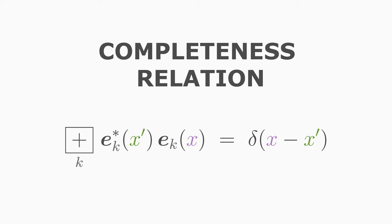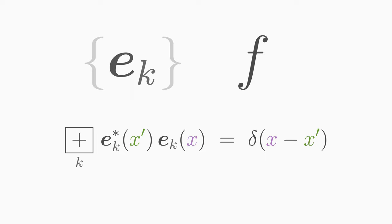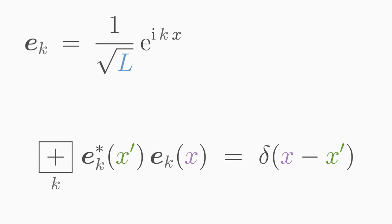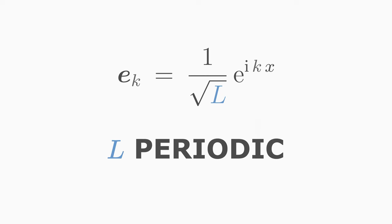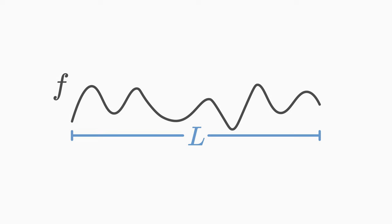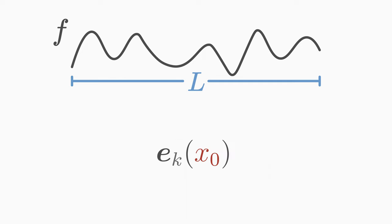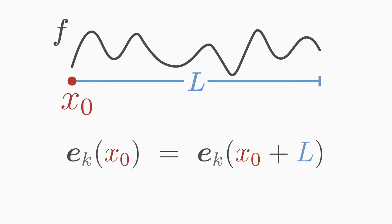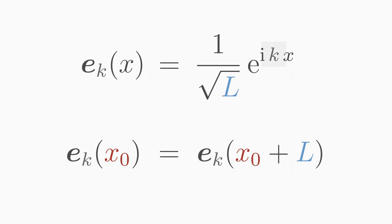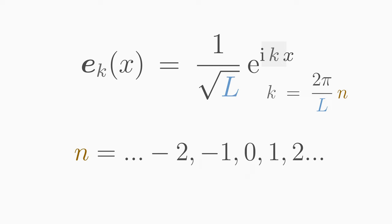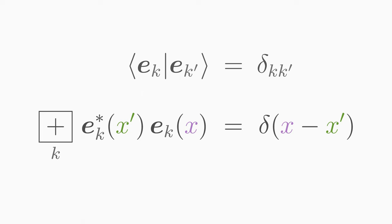The second property that the set of functions must fulfill to be a basis is the completeness relation. With this relation we make sure that we can represent every function as a linear combination of the chosen basis functions. We can show that the set of exponential functions is orthonormal and complete, however only under one condition: the exponential functions must be L-periodic if we want to represent a function in an interval of length L as a Fourier series. This periodic boundary condition means the wave number k can only take discrete values 2πn/L, where n is an integer. The proof of orthonormality and completeness is left out of the video and can be found in the related lesson linked in the description.